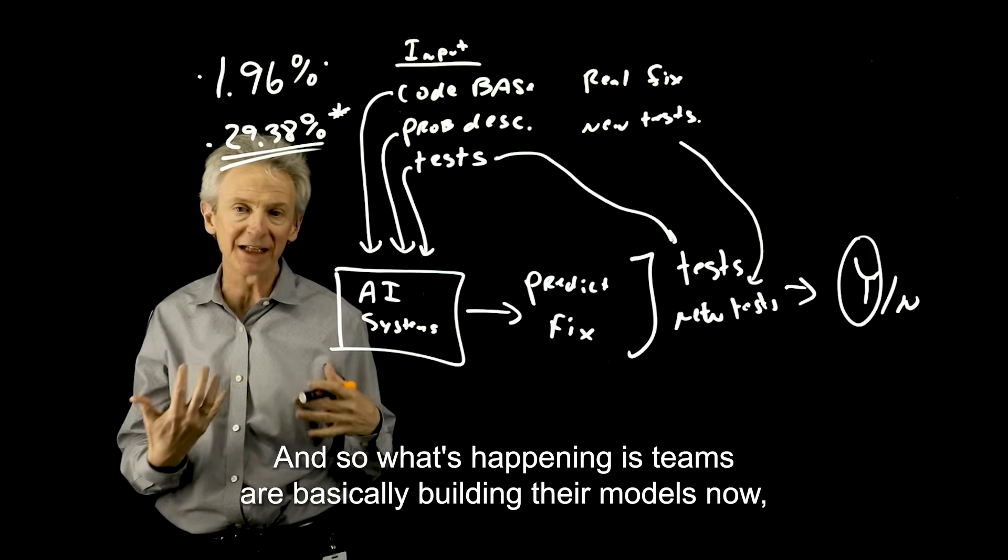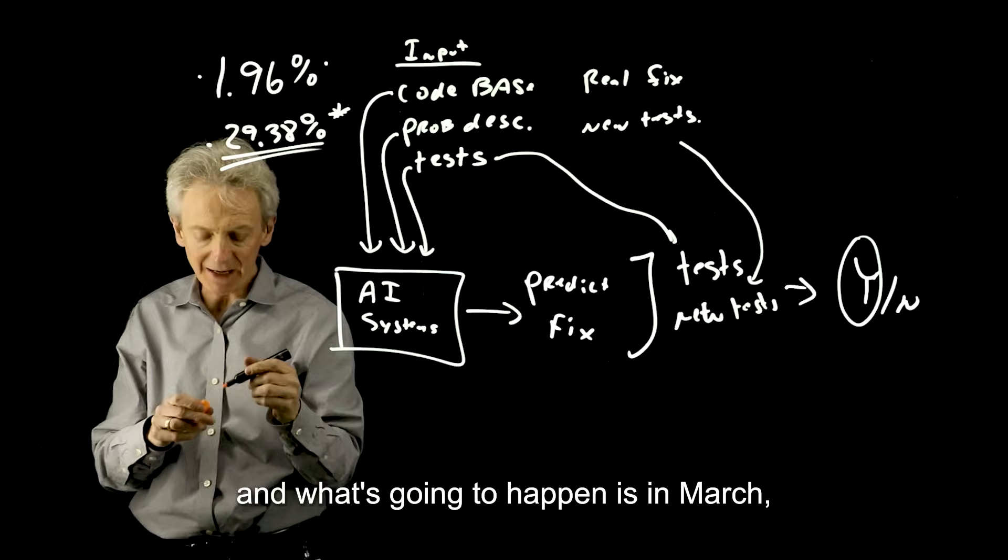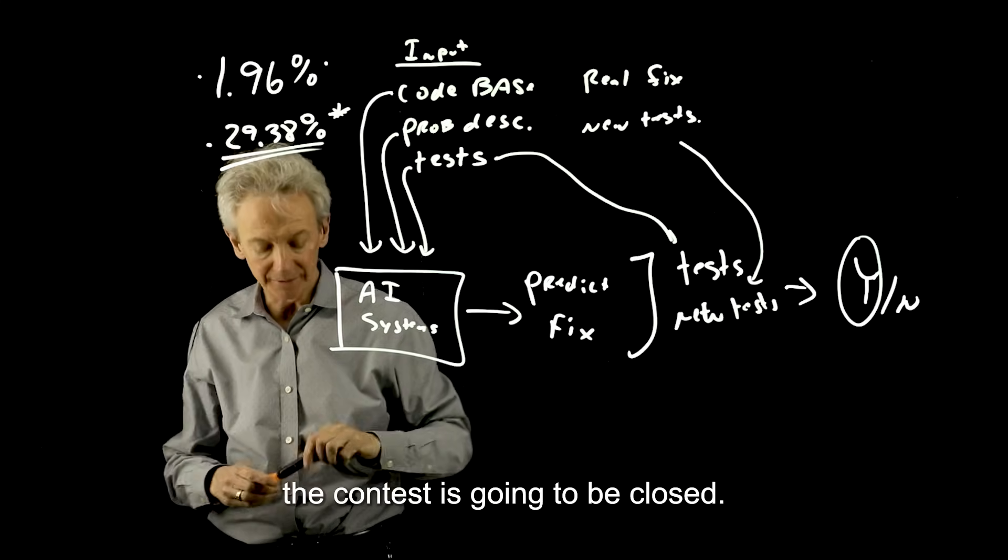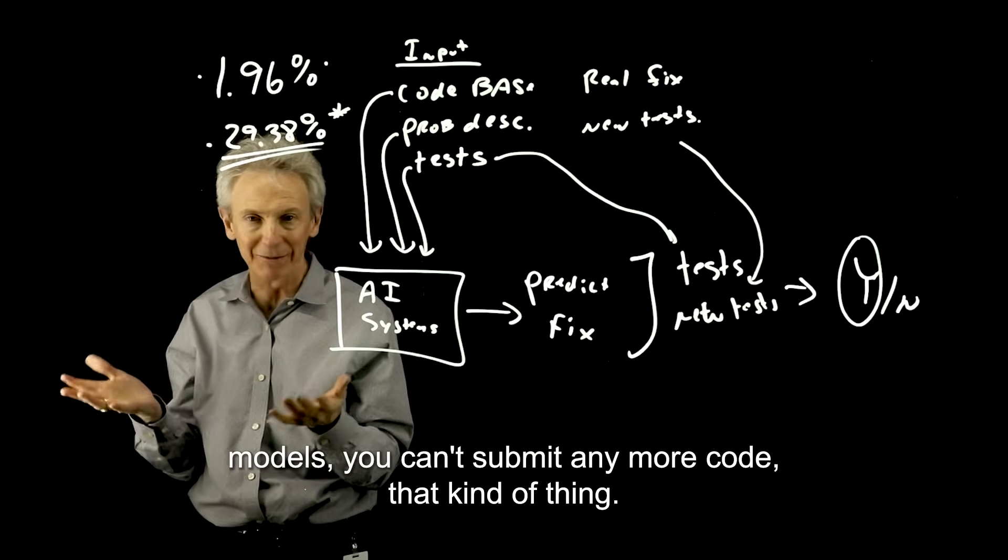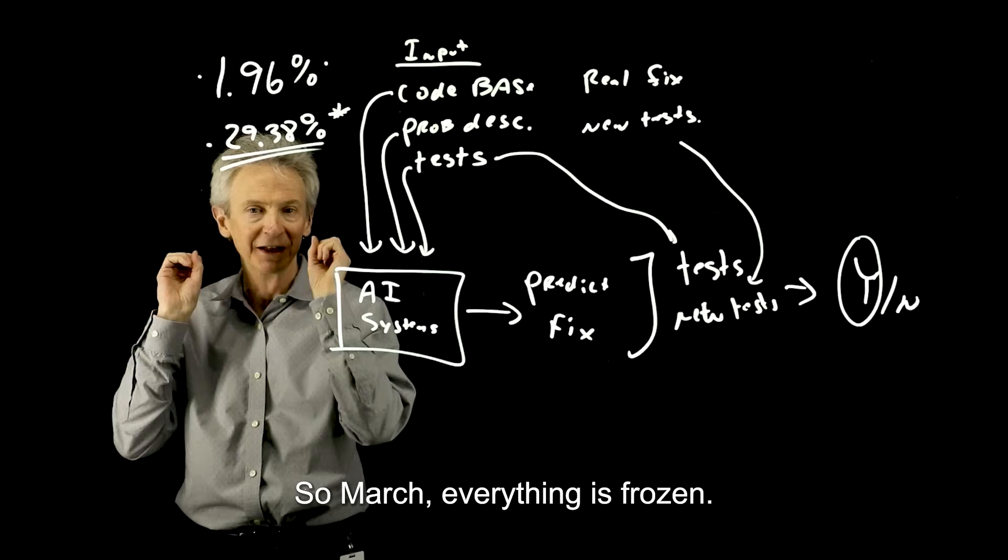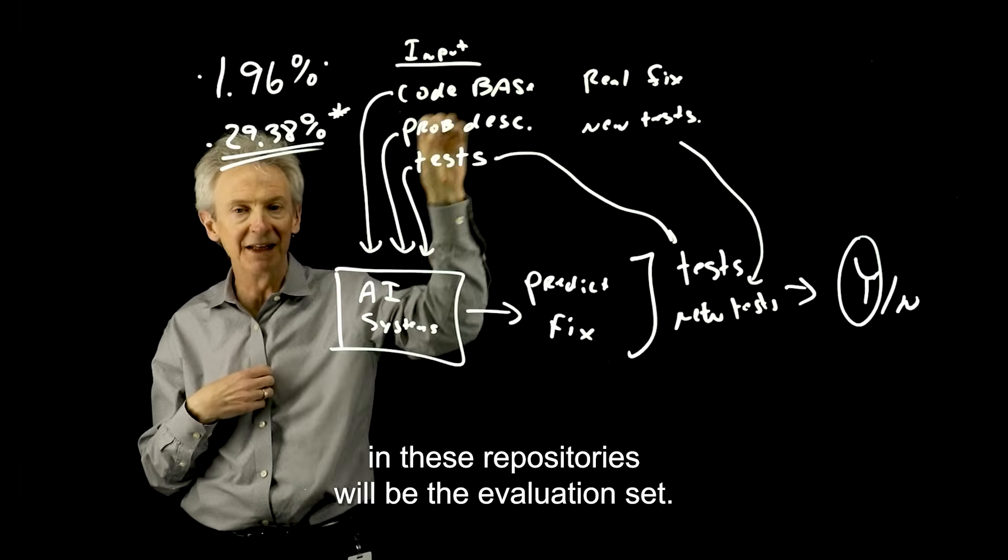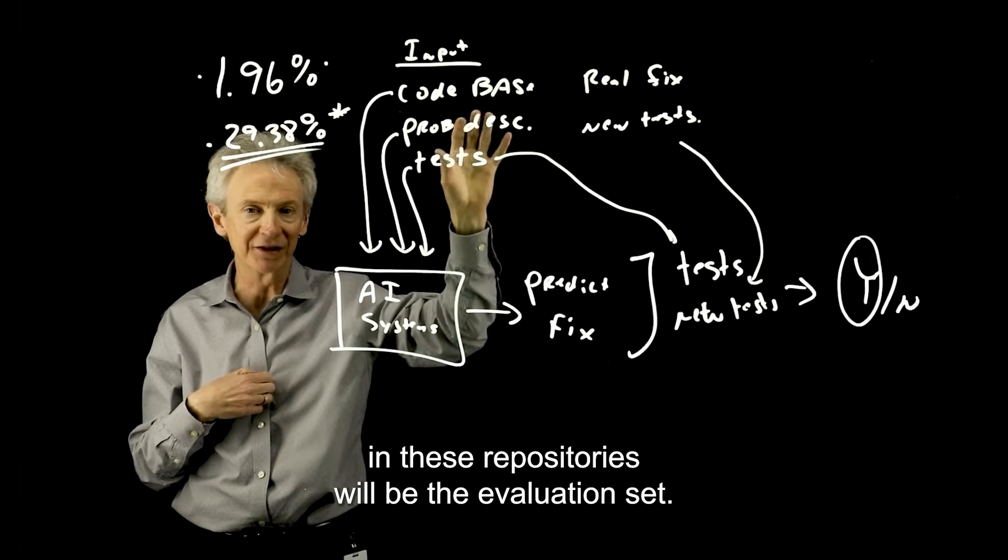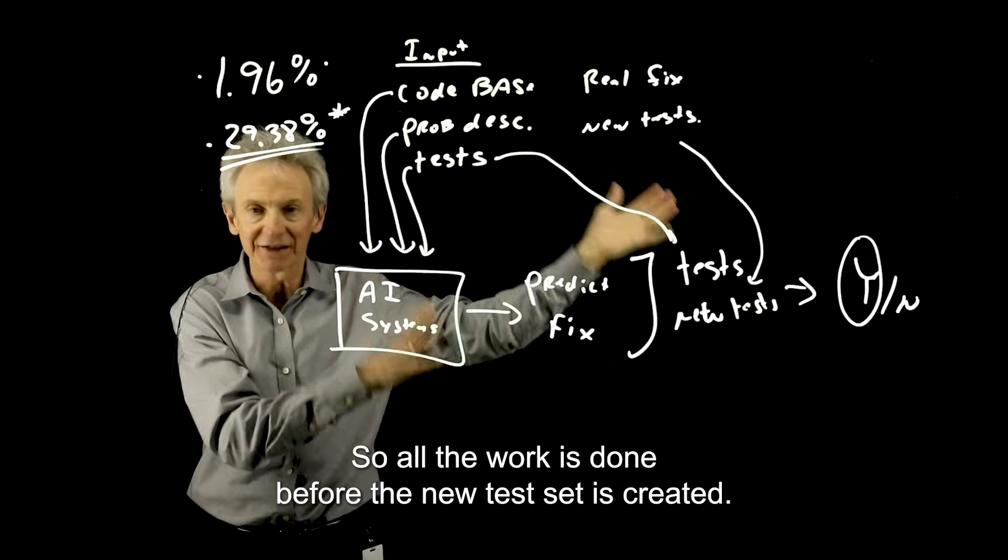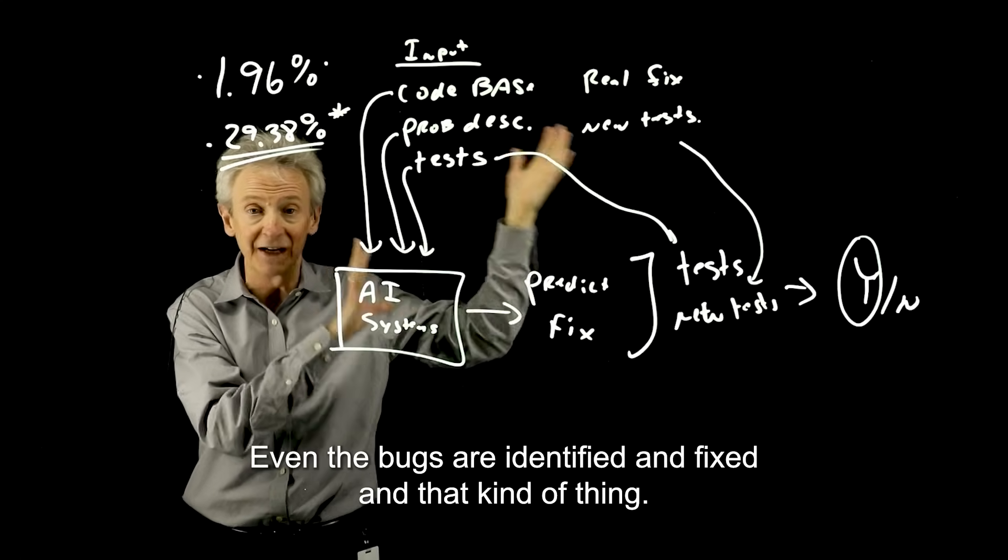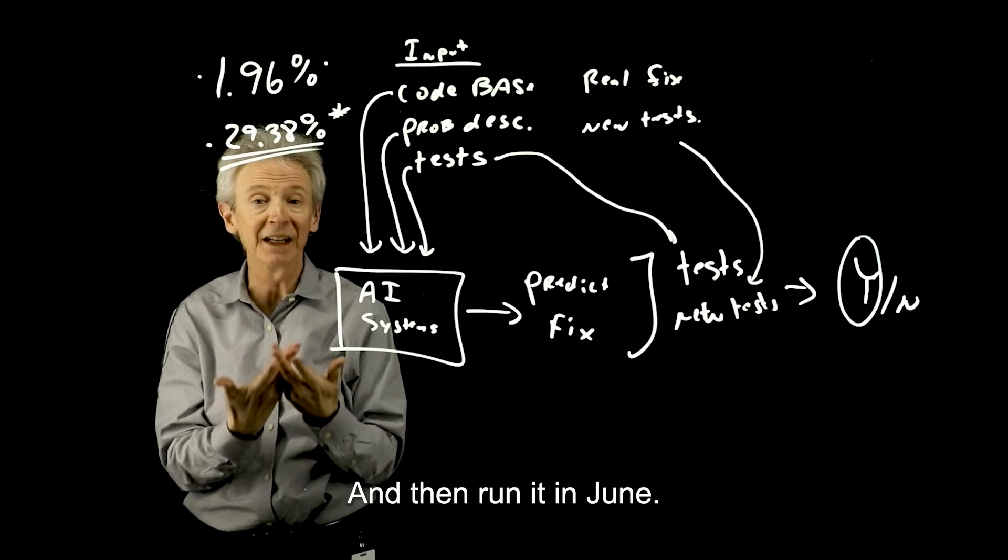And so what's happening is teams are basically building their models now. And what's going to happen is in March, the contest is going to be closed. You can't submit any more models. You can't submit any more code, that kind of thing. So March, everything is frozen. And then bugs reported between March and June in these repositories will be the evaluation set. So all the work is done before the new test set is created. Even the bugs are identified and fixed and that kind of thing. So they're going to build the test set after all the code is done and then run it in June.